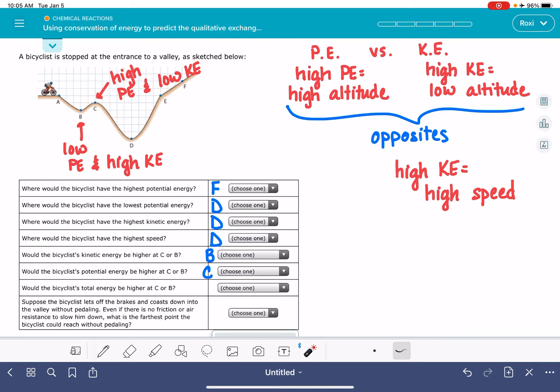What about the total energy? This drop-down menu gives you not just the letter options A through F, but also the option to choose that the energy is the same. So regardless of the scenario, regardless of where you are along this path, the potential energy plus the kinetic energy is some sort of constant. It's always the exact same number.